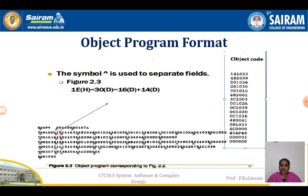If the starting address is not given in the program, we take it as 0. In this example, four text records are used. Each text record has a starting address, a length, and the object codes stored within it. Finally, the end record starts with E in column 1, and columns 2–7 represent the address of the first instruction to be executed.